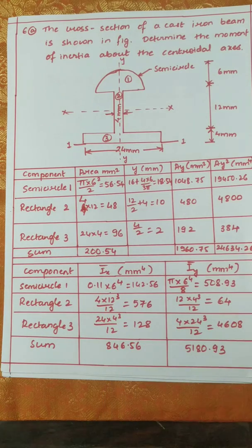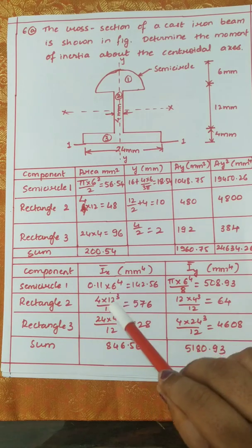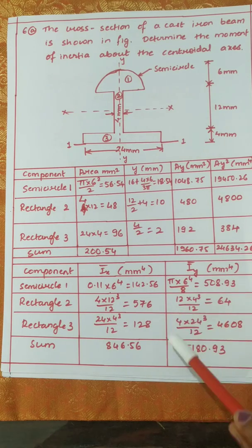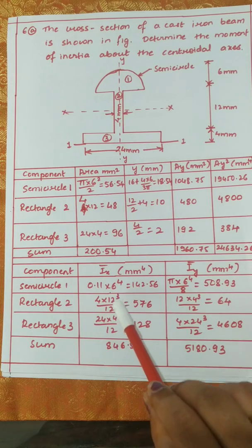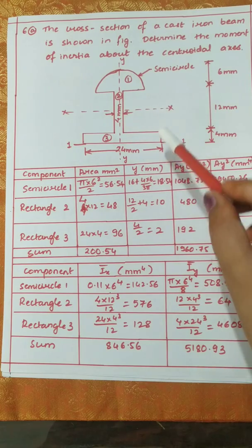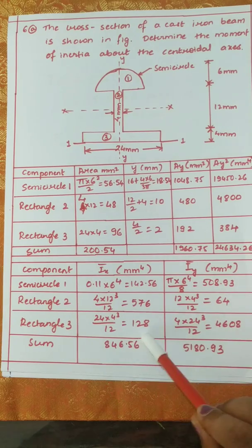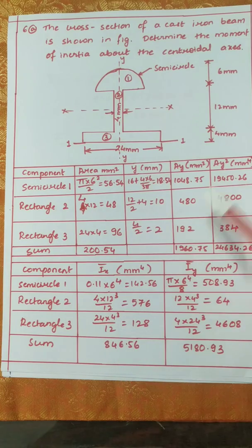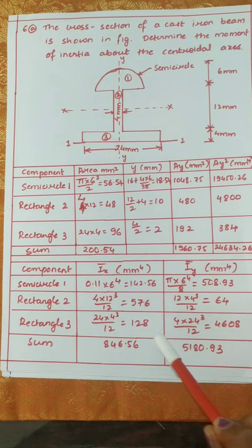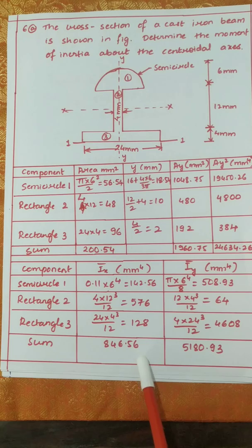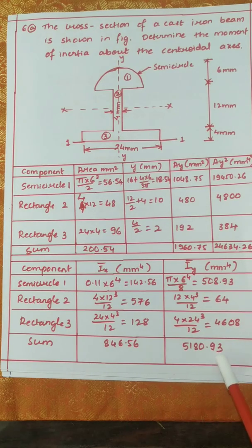Now we find I_x̄ and I_ȳ for each shape. For the semicircle, I_x̄ = 0.11·r⁴ = 0.11×6⁴ = 142.56, and I_ȳ = π·r⁴/8 = 508.93. For rectangle 2, I_x̄ = B·D³/12 = 4×12³/12 = 576, and I_ȳ = D·B³/12 = 12×4³/12 = 64. For rectangle 3, I_x̄ = B·D³/12 = 24×4³/12 = 128, and I_ȳ = D·B³/12 = 4×24³/12 = 4608. Total summation of I_x̄ = 846.56; total summation of I_ȳ = 5180.93.